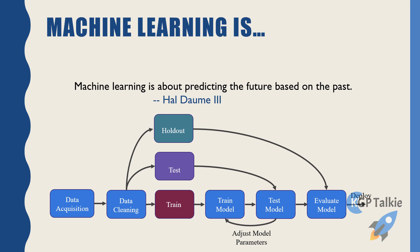We keep doing this unless and until we get our desired accuracy, or the model gets overfit. Once we train and test our data, we evaluate our model on testing data and on unseen data. Once we have evaluated and tuned each and every hyperparameter in our machine learning model, we deploy this model into an application.